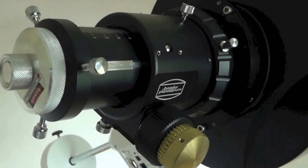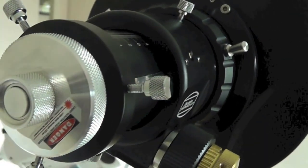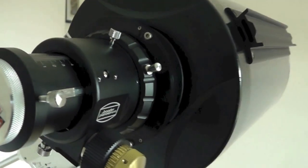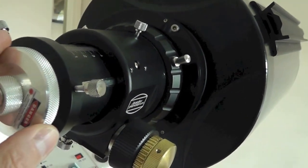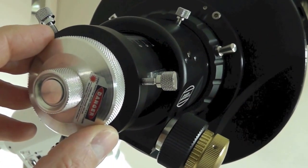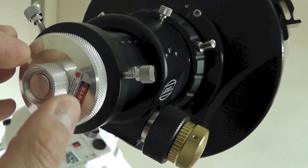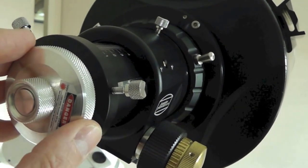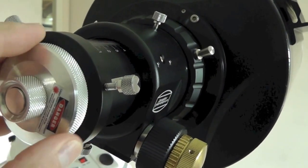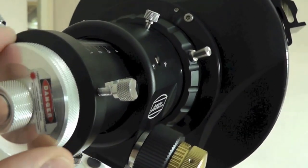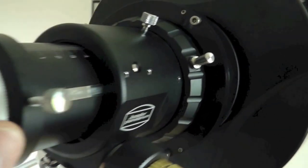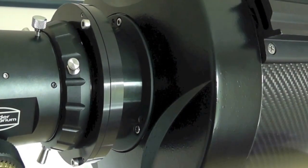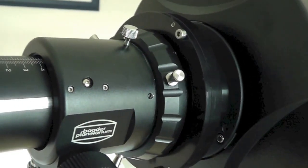This is step one of the collimation procedure of this OC-8 telescope. What I've got here is a Howey Glatter laser collimator with a fine beam emitting out the front. You could use any other collimator you like for this particular step, but I'm using the Howey Glatter one because it's extremely accurate.